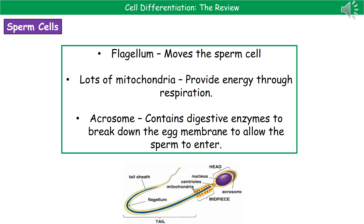The first specialized cell we need to know about are sperm cells. The whole purpose of the sperm cell is to transfer genetic information from the father to the new offspring. There are a few key adaptations we need to know that allow it to carry out that function. The first one is it's got a flagellum, which is basically like a tail, and what that does is it spins, allowing the sperm cell to move — which is important when it's got that little journey to make to find the egg.